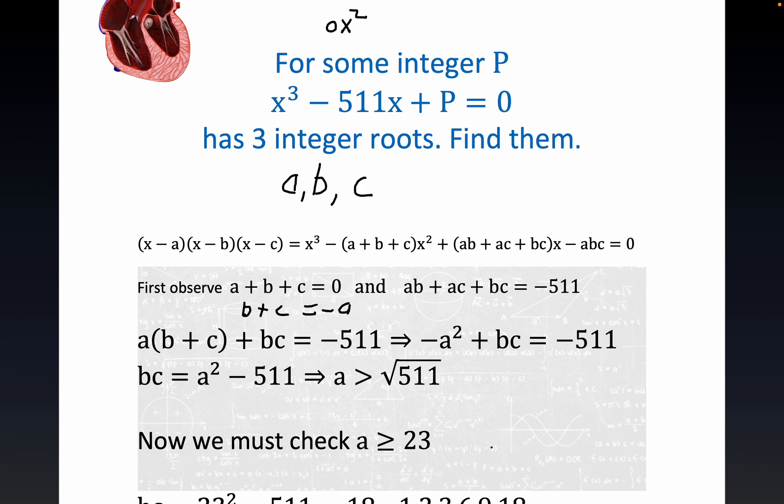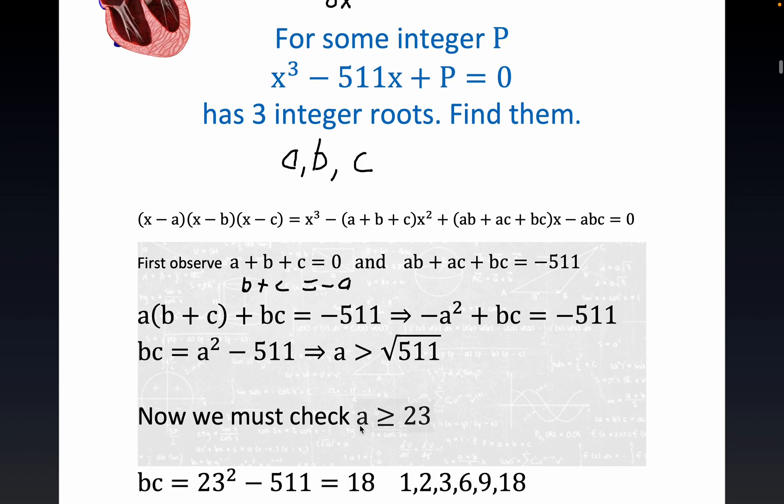Now 23 squared is what, 529? So it's clear that we have to check for a that are greater than 23. This is clear right here why a has to be greater than the square root of 511 just based on this equality.